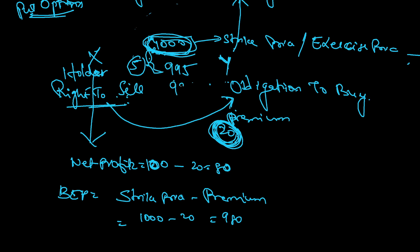If the spot price is between 980 (the breakeven point) and 1000, the holder will be reducing his loss, since he already incurred 20 loss as premium. If the price comes below 980, he will be making a profit. If the price goes beyond 1000, he will ignore the contract, let it expire, and incur the complete loss of his premium.